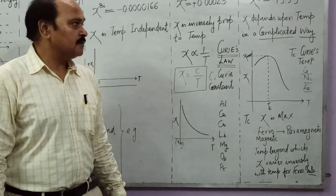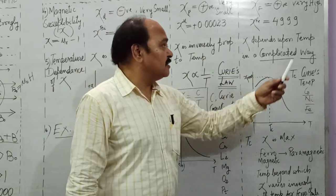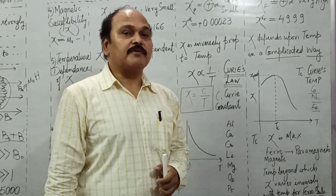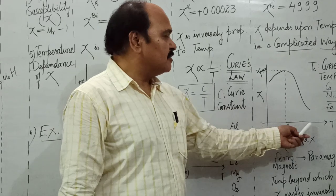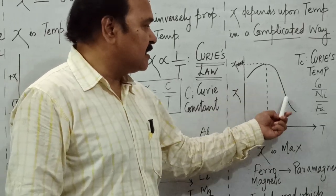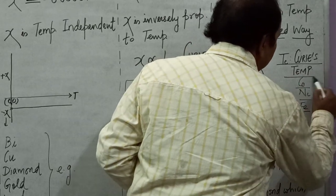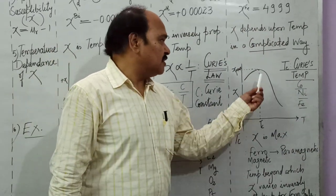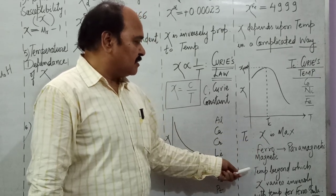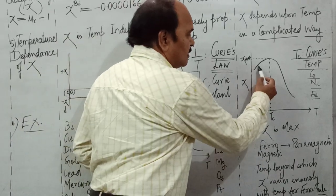For ferromagnetic substances, χ depends on temperature in a complicated way, showing both direct and inverse variation. In the χ versus temperature graph for iron, as temperature rises χ initially increases and then decreases. The temperature at which χ reaches its maximum value is called Curie's temperature — a very important concept.